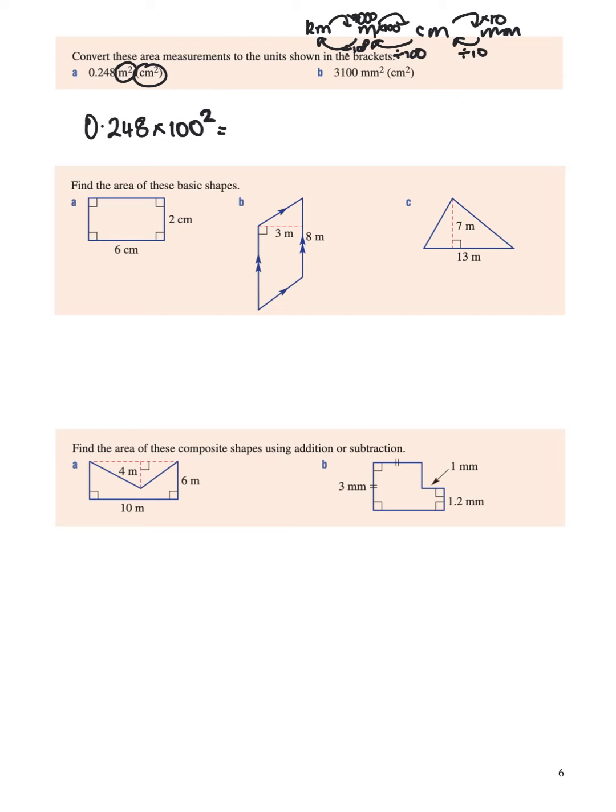So that's going to become 0.248 times one zero zero zero zero—that's a hundred squared, ten thousand. I've got double the zeros. And let's move our decimal point. Likewise, it's going to become a bigger number. So one, two, three, four. 2,480 centimeters squared.